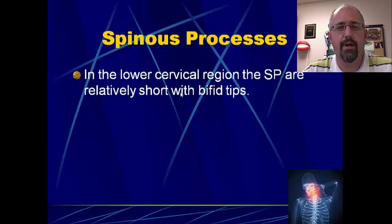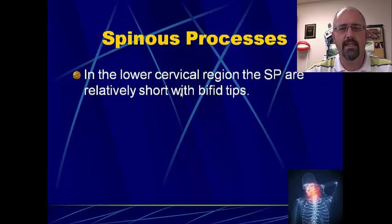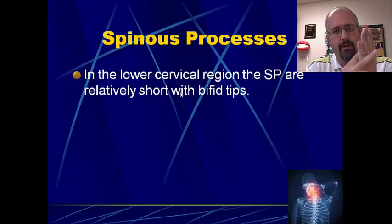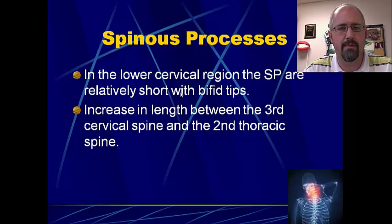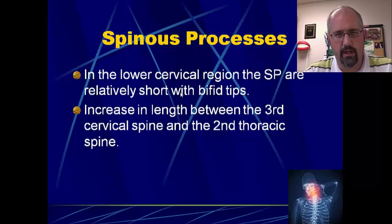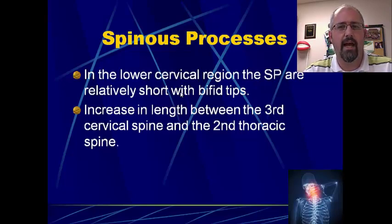The spinous processes in the lower cervical region are pretty short and most of them have bifid tips. The reason they have bifid tips is that as the neck goes into extension, the spinous process above comes and just gets an increase in range of motion because it can slot into that bifid tip. As you work your way down through the cervical spine, the spinous processes typically increase in length between the third cervical spine and the second thoracic. But by the time you get into C6, C7, the bifurcation has pretty much ceased, and it's only a single tip by the time you get into T1, T2.